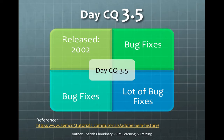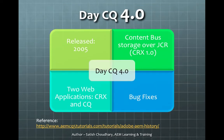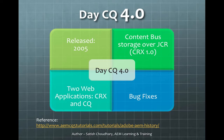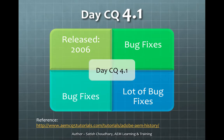Then came another revolution: DCQ 4.0, released in 2005. It introduced content storage over JCR, and CRX 1.0 came into picture with this. It now had two web applications — CRX and CQ — along with improvements and bug fixes from the previous version. DCQ 4.1 was released in 2006, focused on improving the product with plenty of bug fixes and a more stable version of CQ 4.0.